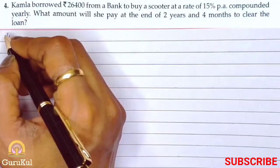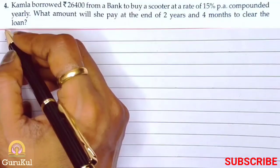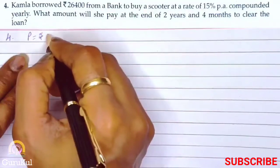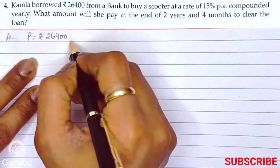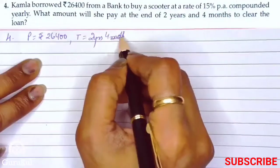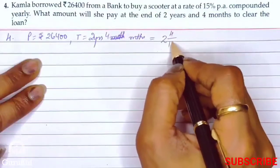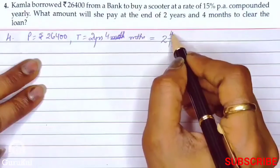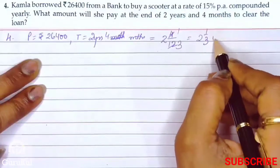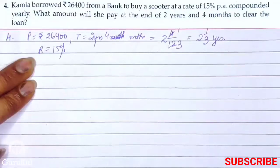Question number 4: Kamla borrowed Rs.26400 from a bank to buy a scooter at the rate of 15% per annum compounded annually. What amount will she pay at the end of 2 years and 4 months to clear the loan? So principle is Rs.26400, time is 2 years 4 months which can be written as 2 and 4 by 12 years — 4 and 12 can be reduced to 1 by 3 — so time is 2 and 1 by 3 years. Rate is 15% per annum.